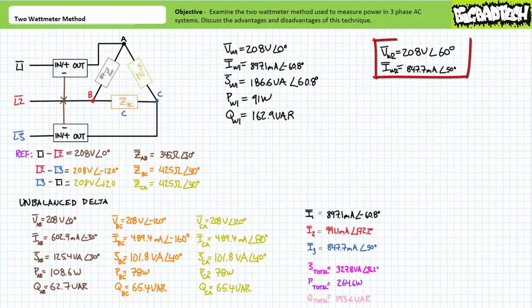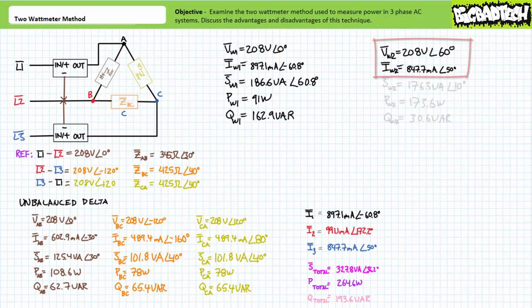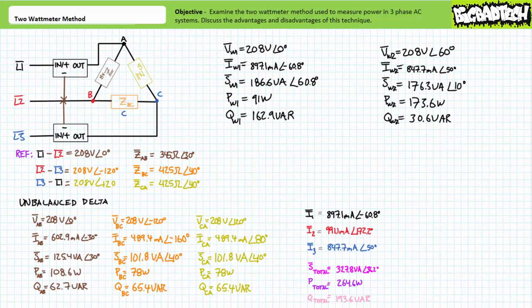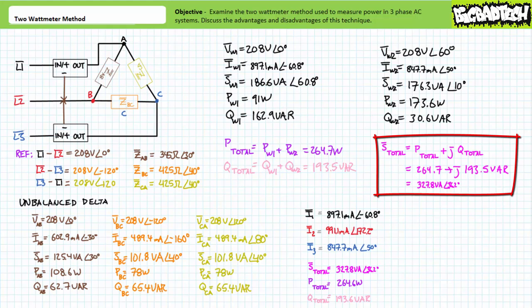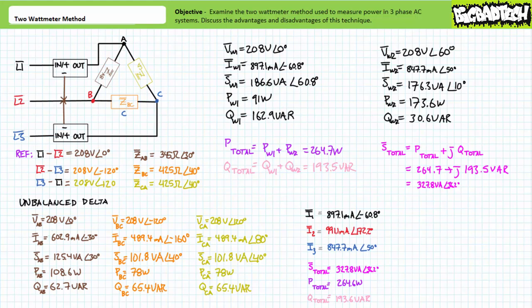Watt meter 2's voltmeter is flip-flopped. Watt meter 2's line 3 to line 2 voltage reading would be 208 volts at an angle of 60 degrees, and its line L3 current reading would be 147.7 milliamps at an angle of 50 degrees. Current would lag voltage by a relative 10 degrees. Application of the AC power formula demonstrates watt meter 2 would display 176.3 volt amperes of apparent power, of which 173.6 watts is real power and 30.6 vars is reactive. Taken in isolation, this watt meter's reading is also garbage. If, however, we add watt meter 1's reading with watt meter 2's reading, we obtain a total real power figure of approximately 264.7 watts and a total reactive power figure of 193.5 vars. Packaging these as a complex number in rectangular format, we can convert to polar format as 327.8 volt amperes — our total apparent power figure. These figures closely match those from our previous analysis, with the advantage of being external to the delta and using less equipment.